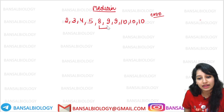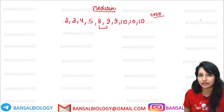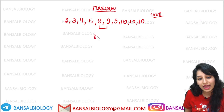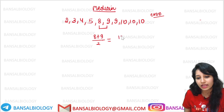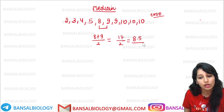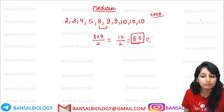In this condition, the two centers are 8 and 9. So I have to take the average of 8 and 9. Eight plus nine is 17, 17 by 2, and that will be 8.5. So what is 8.5? That is the median here.